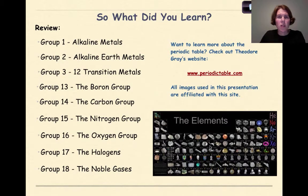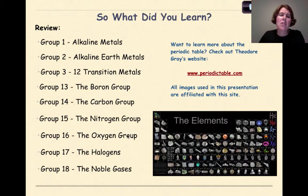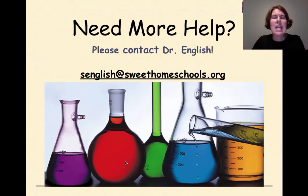So what did we learn in this tutorial? We went over the properties of group 1, group 2, groups 3 through 12. We talked about the boron group, the carbon group, the nitrogen group, the oxygen group, a little bit about the halogens, and finally wrapped it up with the noble gases.